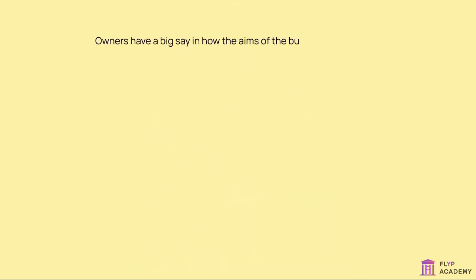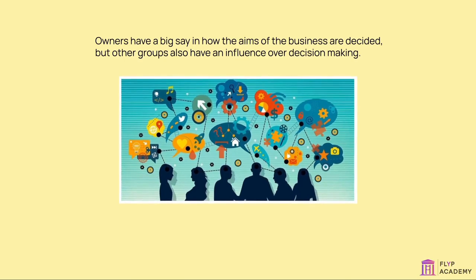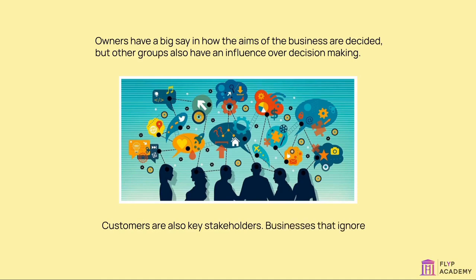Owners have a big say in how the aims of the business are decided, but other groups also have an influence over decision making. For example, the directors who manage the day-to-day affairs of a company may decide to make higher sales a top priority rather than profits. Customers are also key stakeholders — businesses that ignore the concerns of customers find themselves losing sales to rivals.